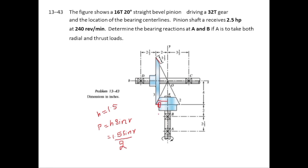In the case of bevel gear, the force is exerted at the average radius because the radius is not constant. So the average radius equals 2 minus 1.5·sin(gamma), divided by 2. Here, 2 inches is the radius of the pinion and 4 inches is the radius of gear 3.